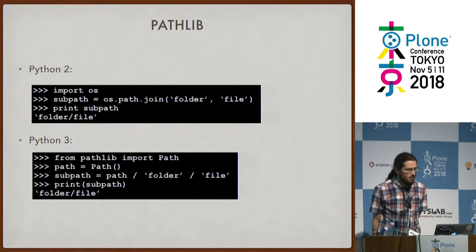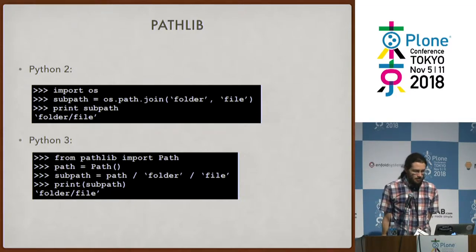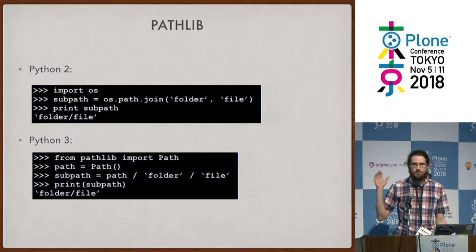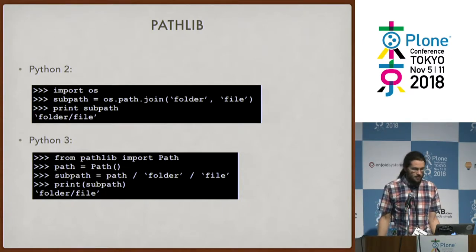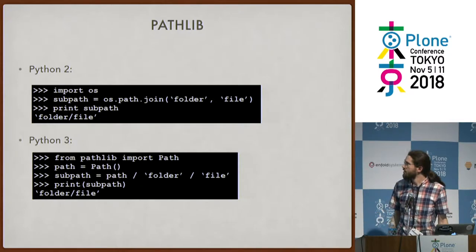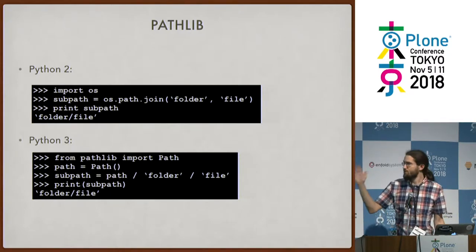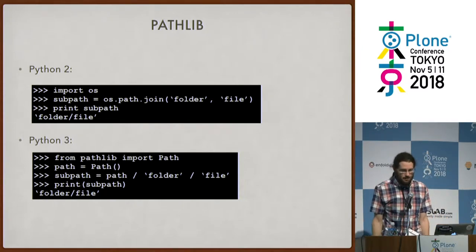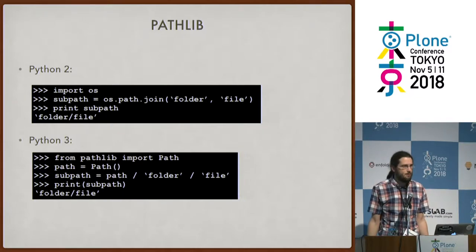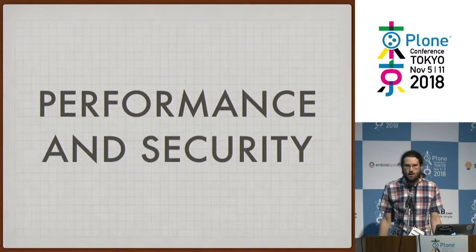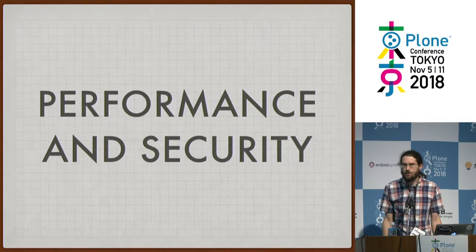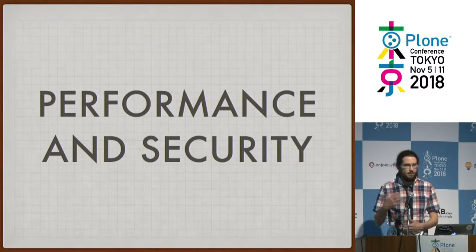Pathlib is a neat thing in the standard library for working with file system paths. In Python 2, we'd use os.path.join; in Python 3, you import Path, create a path instance, and you can use the division operator - the slash - so it looks like you're building a directory path. When formatted as a string, it uses the correct separator for your operating system. Finally, performance and security improvements in Python 3: whatever the core Python team comes up with in terms of improvements, we're going to get.